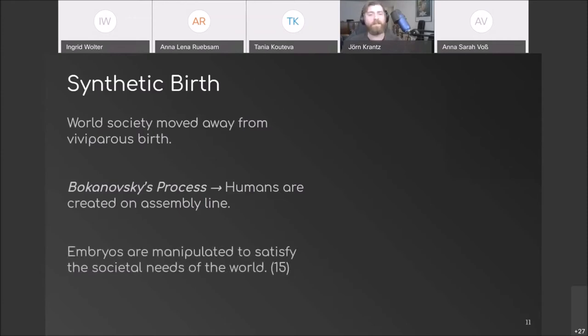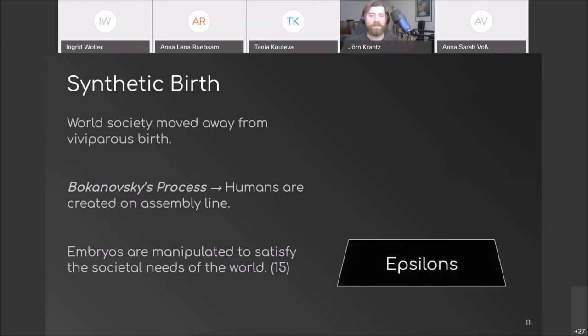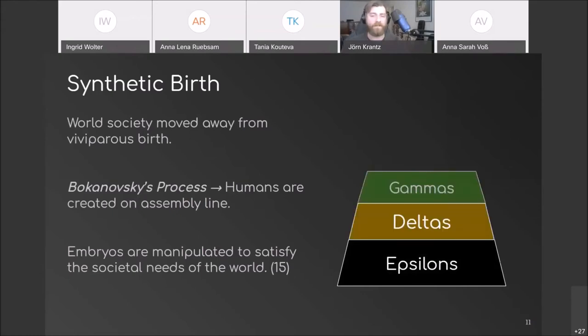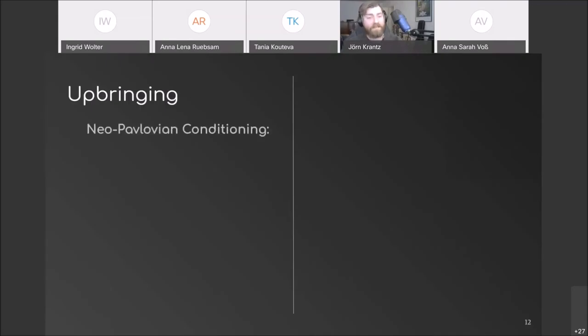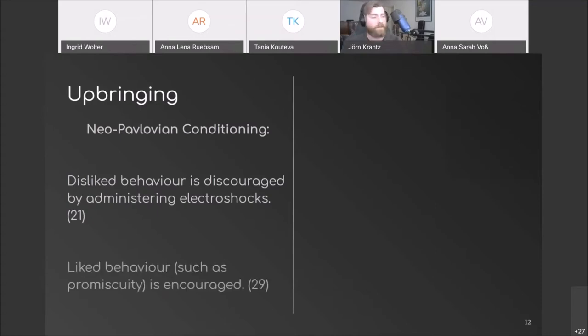In the world society, the castes are color coded so that they can be distinguished. To further ensure the docility of the people, each of the castes undergoes their specific routines of Pavlovian conditioning. Disliked natural behaviors are discouraged through electroshocks, which even babies are subjected to. Liked behaviors are reinforced and gradually built upon to shape the human that you desire.